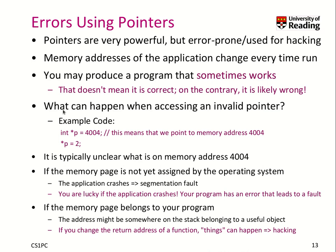Let's think about what happens when you access an invalid pointer. Here, I assign p as a pointer to an integer on memory address 4004, and I try to dereference p and save — wherever p points to — the value 2. So I try to save the value 2 on memory address 4004.